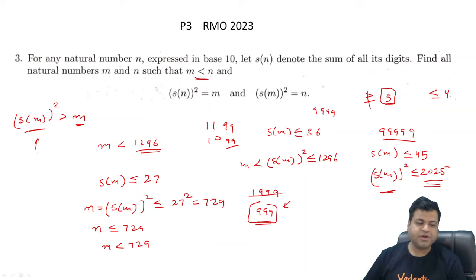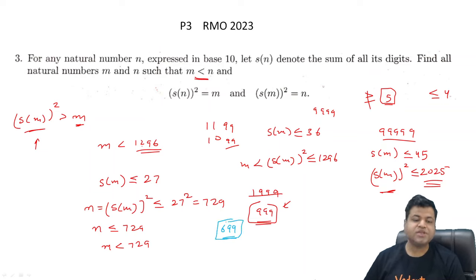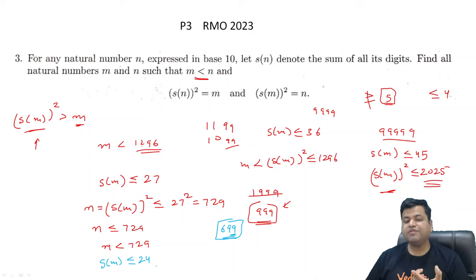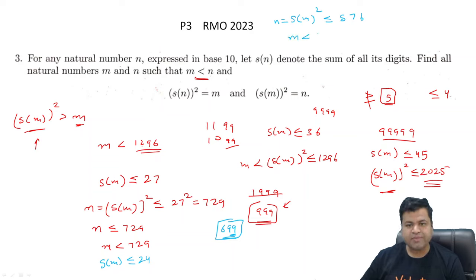Repeating the same argument: among all numbers less than 729, the maximum digit sum corresponds to 699, which gives digit sum 24. So S(M) ≤ 24, which means M = S(M²) ≤ 24² = 576. So M must be less than 576.